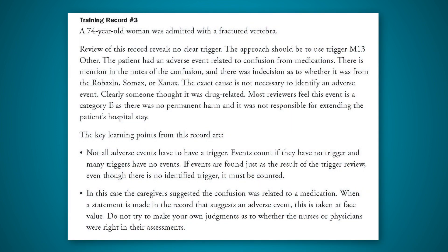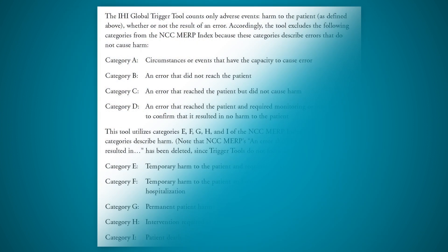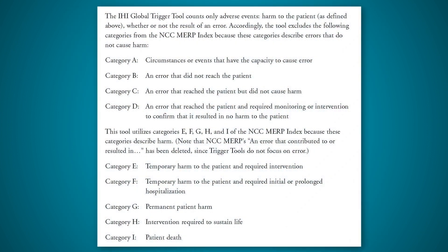When they find that clue, they look a little deeper at that section of the record to determine whether or not something happened. Sometimes the answer is yes, sometimes the answer is no. And if the answer is yes, then we give it a category as to how severe the harm was. The most severe harm would be death, but less severe harm might be that it resulted in them having to stay in the hospital a little bit longer.